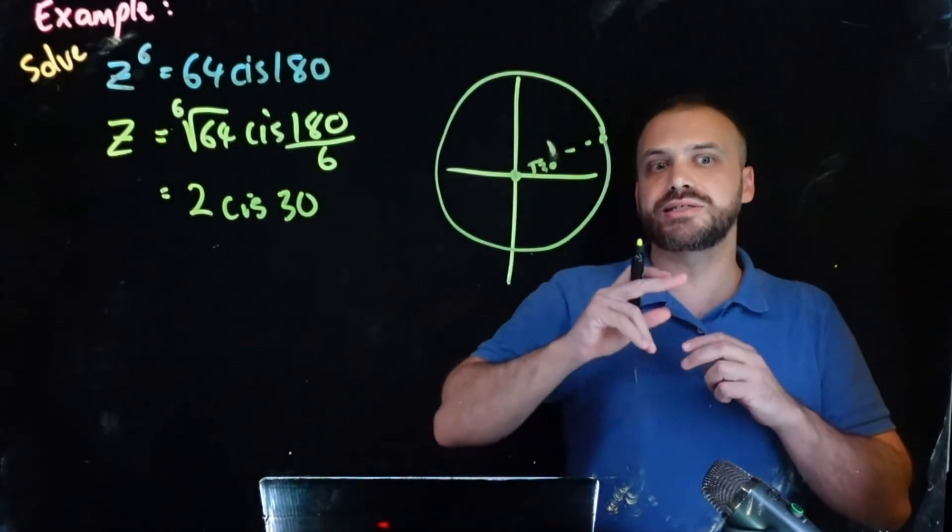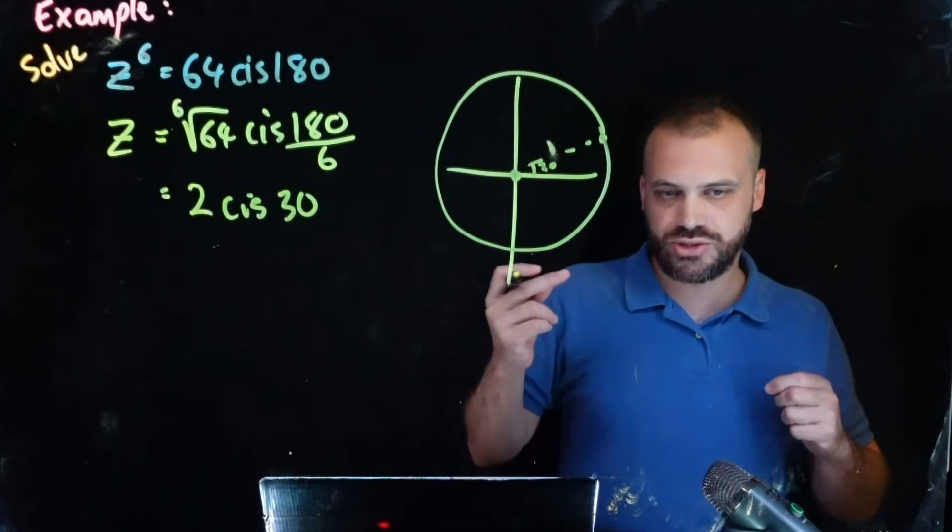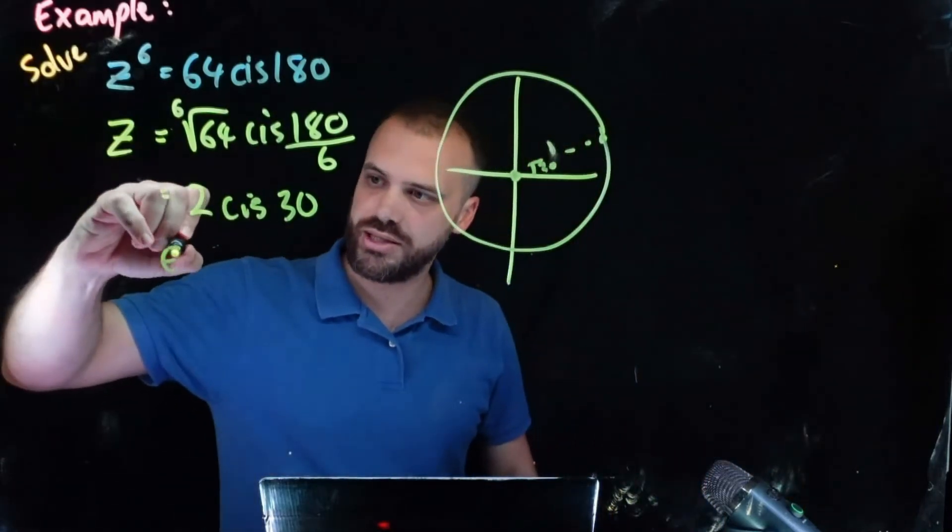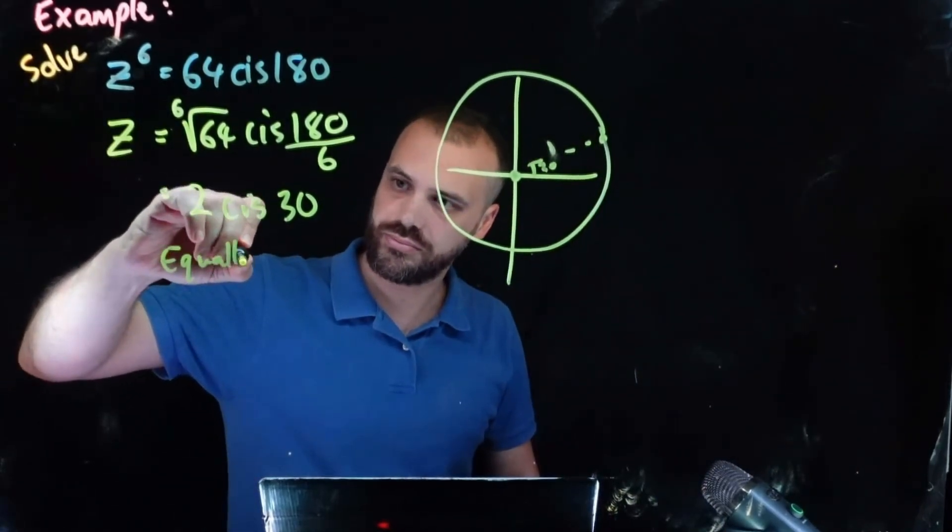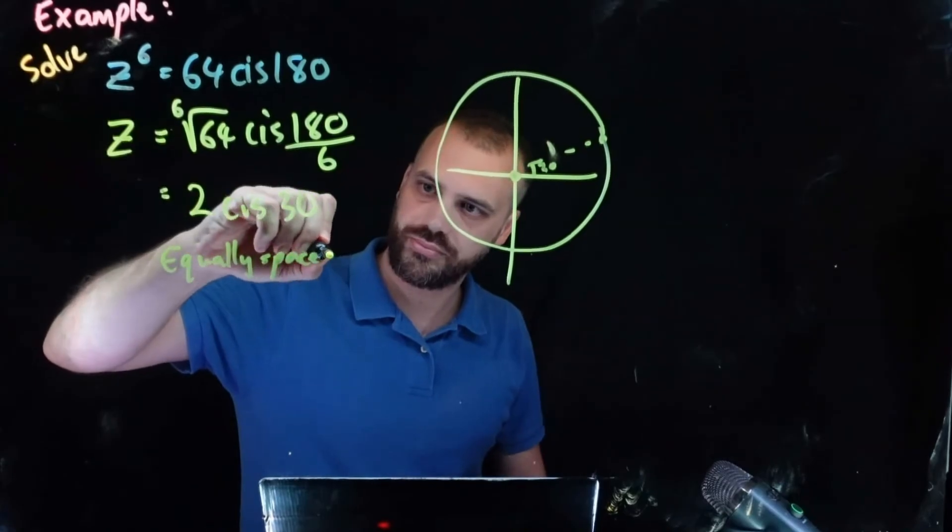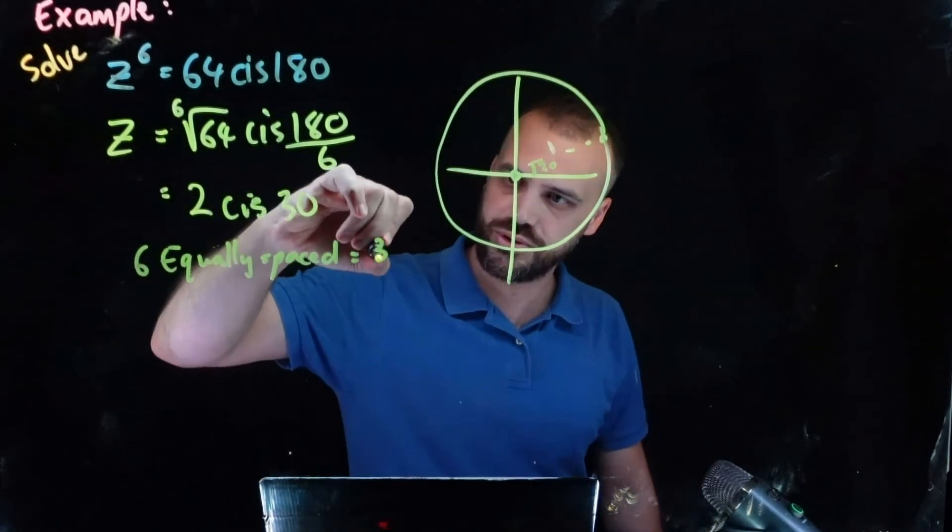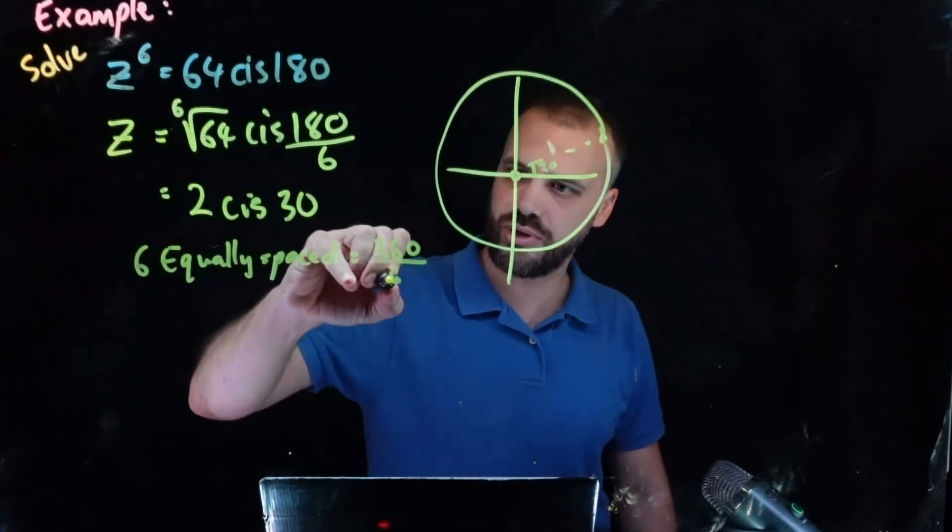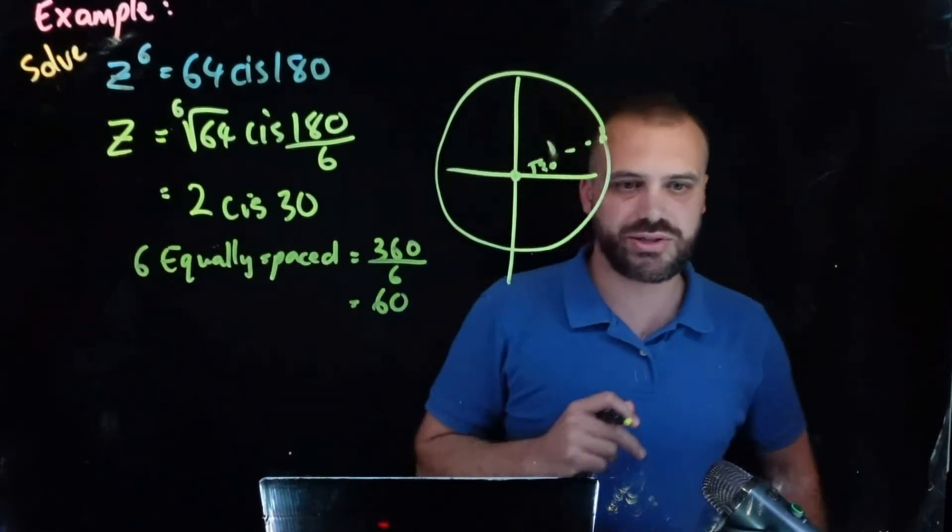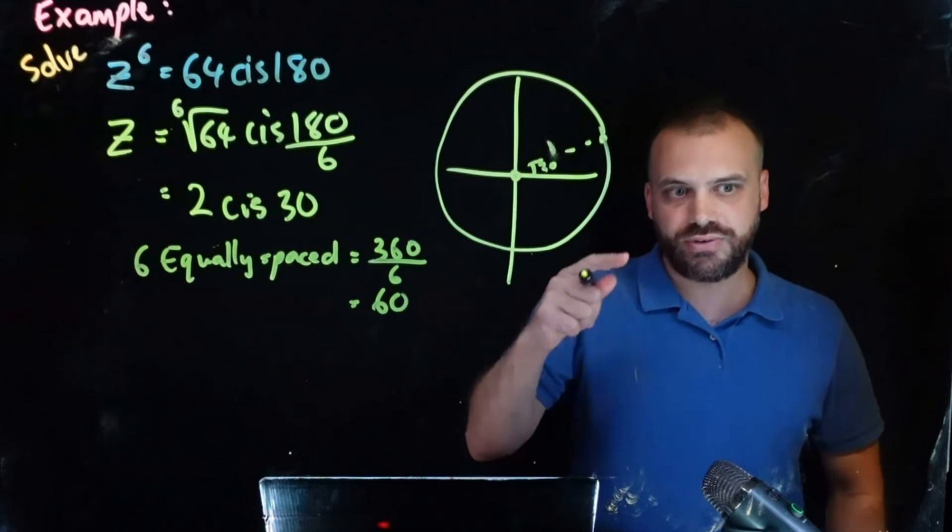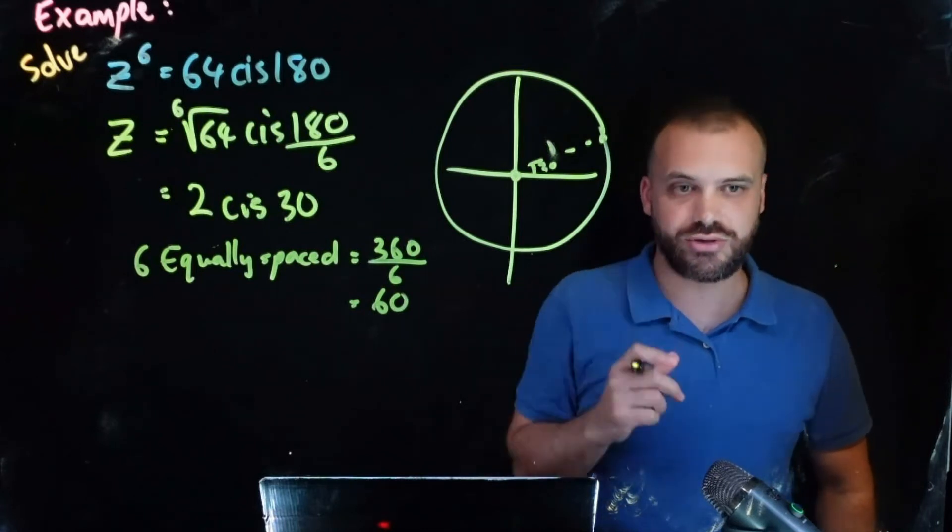If there are six equally spaced solutions, so equally spaced solutions equals 360 divided by 6 equals 60 degrees. That means that each of our solutions is going to be 60 degrees apart.